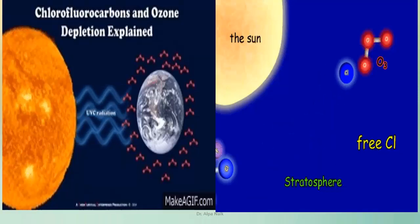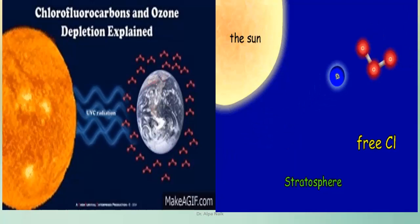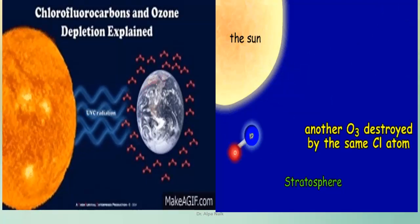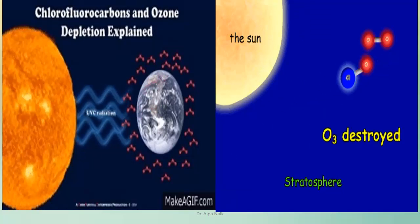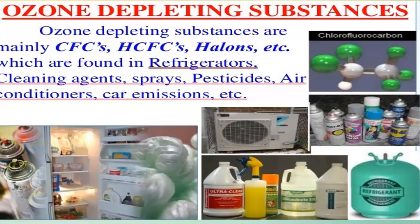Ozone is made up of three atoms of oxygen. When chlorofluorocarbons (CFCs) are released, chlorine destroys ozone by reacting with oxygen. As a result, the layer of ozone gets reduced. A hole has been observed in the stratosphere near Antarctica. Because of this, UV rays directly come to the earth causing skin cancer and cataracts in humans and affecting other animals. The ozone-depleting substances are chlorofluorocarbons, hydrochlorofluorocarbons and halons — released by refrigerators, cleaning agents, air conditioners, car emissions and aerosol sprays.